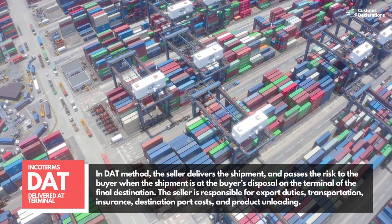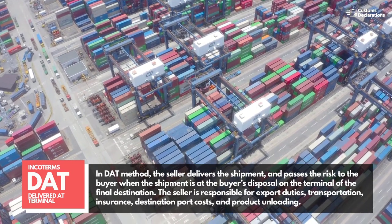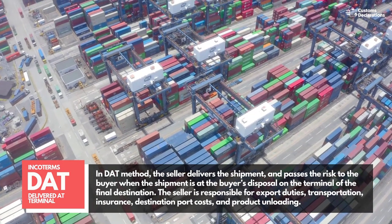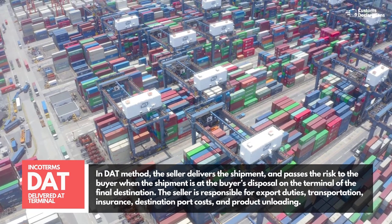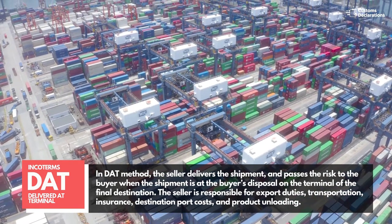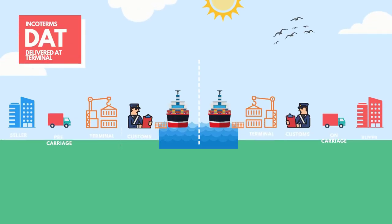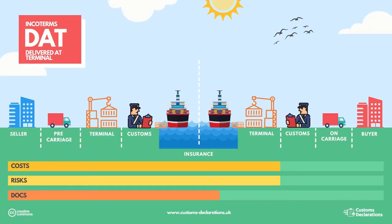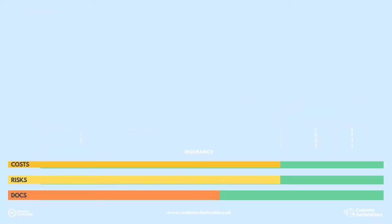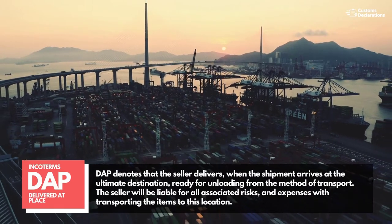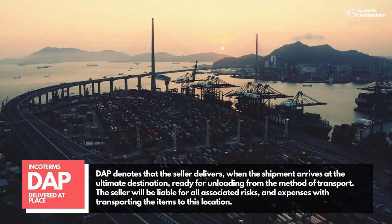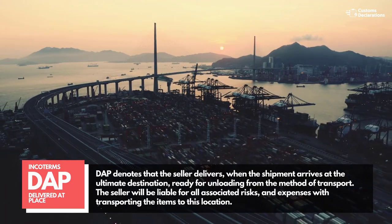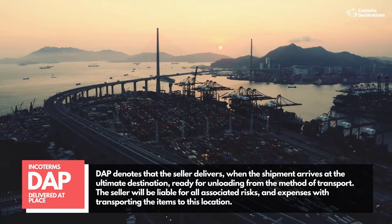In the DAT (Delivered at Terminal) method, the seller delivers the shipment and passes the risk to the buyer when the shipment is at the buyer's disposal on the terminal of the final destination. The seller is responsible for export duties, transportation, insurance, destination port costs, and product unloading. The primary distinction between DAT and DAP is that the seller is responsible for final unloading of items under DAT. DAT denotes that the seller delivers when the shipment arrives at the ultimate destination, ready for unloading, and the seller is liable for all associated risks and expenses with transporting the items to this location.